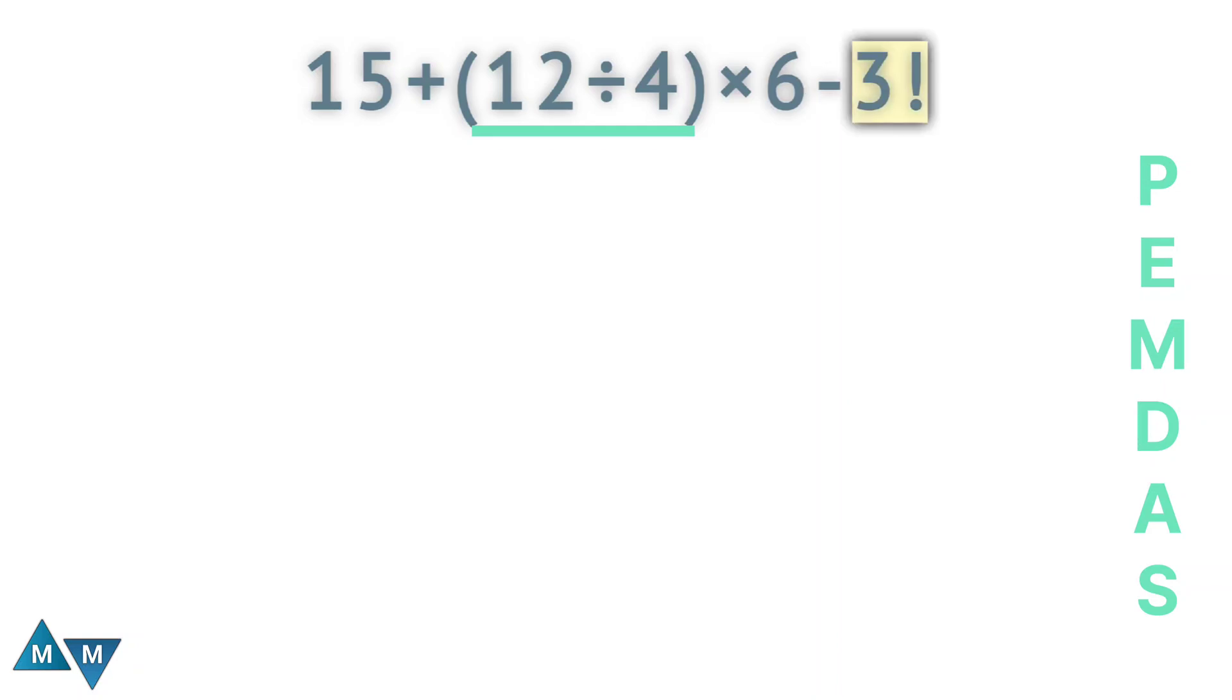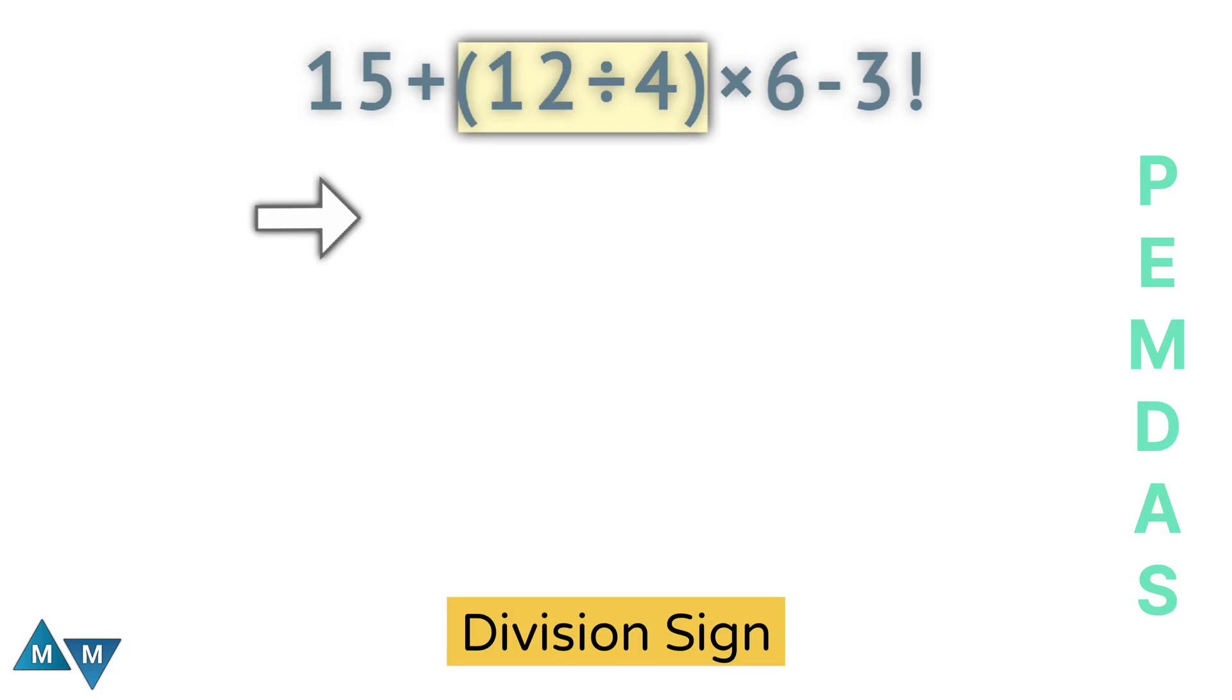The first thing we're going to do is parentheses. We'll simplify everything in the parentheses first. Inside the parentheses, we have a division sign. So 12 divided by 4 will be our first move, which equals 3.